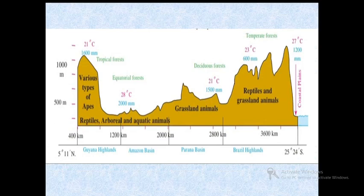In this figure, you can see the rainfall, flora and fauna of Brazil along with the physiography. It is a cross profile extending from 5 degrees 11 minutes north to 25 degrees 24 minutes south. You will notice that changes occur in the above elements as you go from north to south. At the left you will see the height mentioned in meters. From the north, the first region is the Guiana Highlands which extends up to 400 kilometers. The rainfall is 1600 millimeters, the temperature is 21 degrees Celsius, and we find tropical forests and various types of apes here.